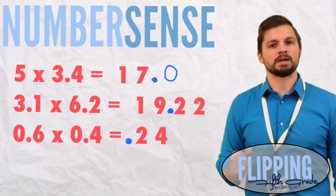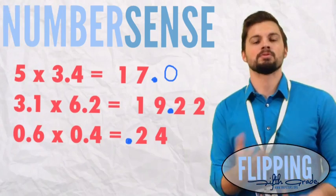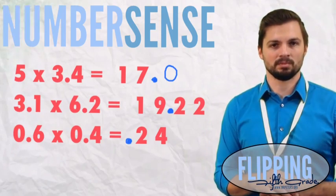Also, notice that there are two digits behind the decimal. And that's how you use number sense to help you with multiplying decimal numbers.